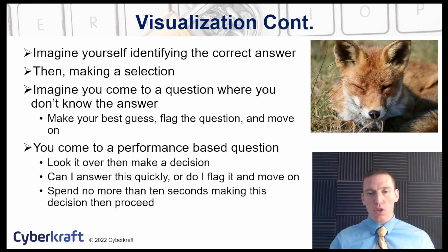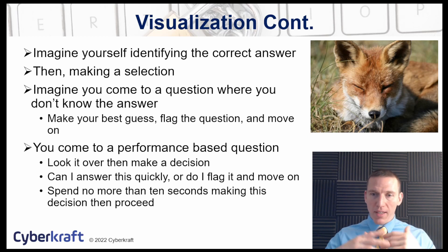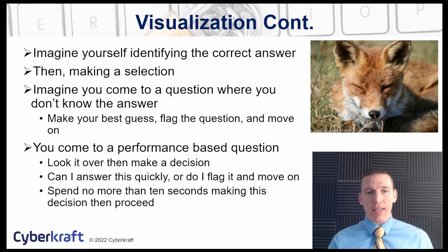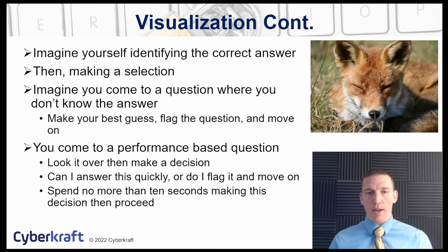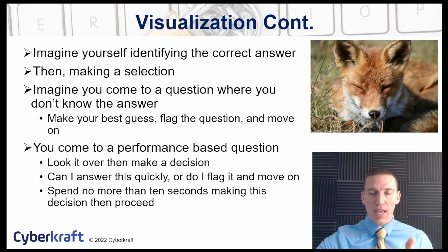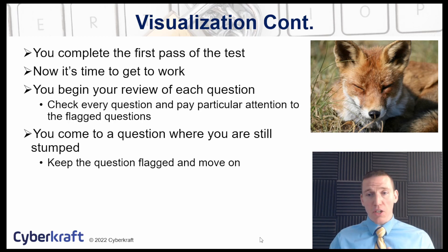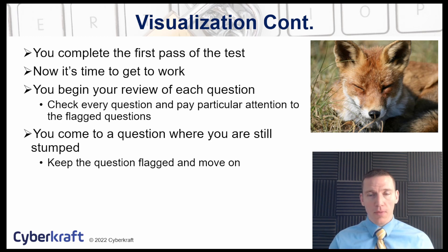Now you come across a performance-based question. Take a few seconds and look at it: can you answer it quickly? If you can, go ahead and start answering. Make your best selections — maybe you answer it but are still not sure of a few things. That's fine, flag it, make all the selections, and move on. If you don't think you can answer it correctly right away, flag it, skip it, and move on through the test — save it towards the end. Once you reach the end of the first pass, go back to the performance-based questions you skipped and answer those.